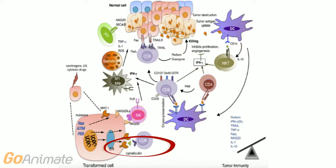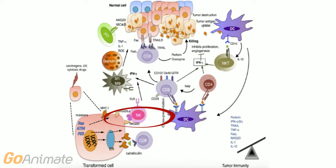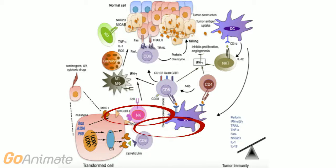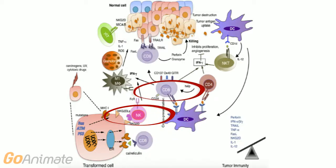The most essential group of cells are the NK cells in the innate system and CD8 T cells in the adaptive immunity. Elimination is initiated when cells of the innate immune system are alerted to the presence of a growing tumour.